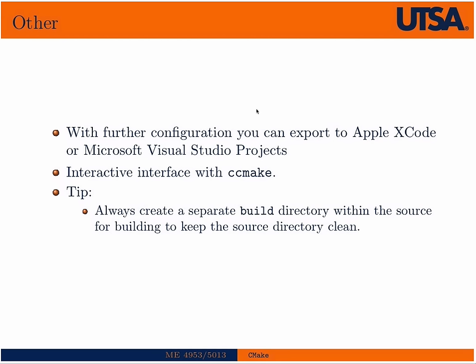With further configuration, you can get the same CMake build system to generate Apple Xcode project files or Microsoft Visual Studio projects. You can also use an interactive CMake by typing ccmake, which brings up a terminal GUI to interactively set variables. It'll show you default settings and let you change them — whether true/false values or locations of libraries and executables for project dependencies. I always recommend creating a separate build directory within the source to keep the source directory clean.